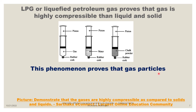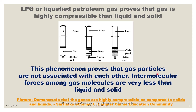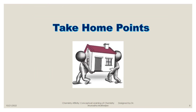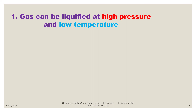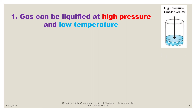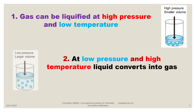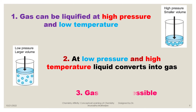Compressibility is one of the properties of gaseous particles. From this, we can conclude that gas particles are not closely associated with each other — the intermolecular forces between gas particles are very weak, which is why they are easily compressible. The key take-home points: gas can be liquefied at high pressure and low temperature; at low pressure and high temperature, liquid converts back into gas; and gas is compressible because intermolecular forces between gas particles are negligible.